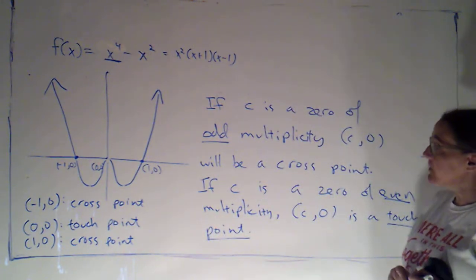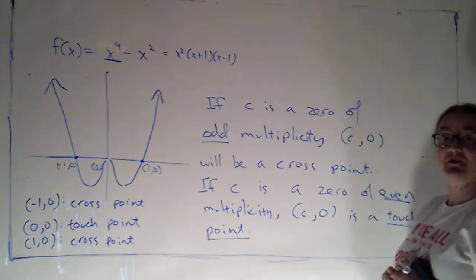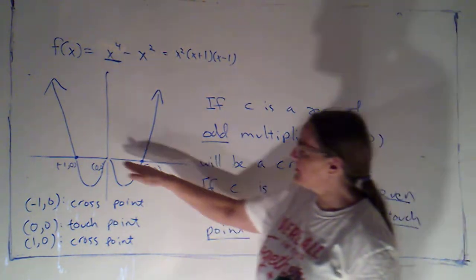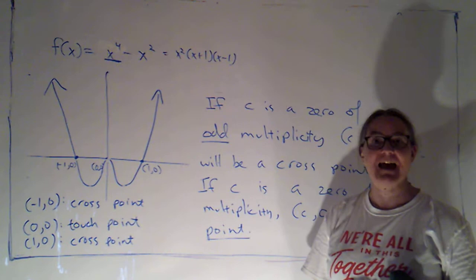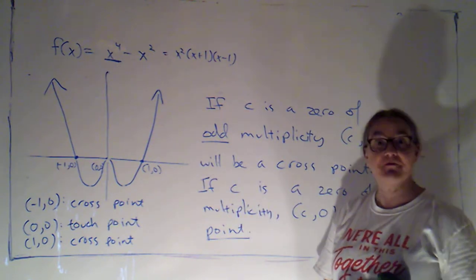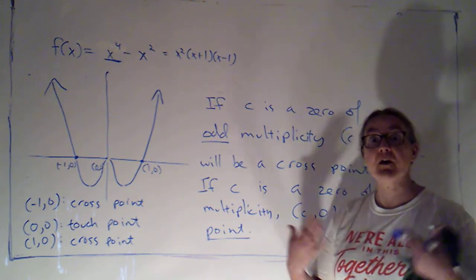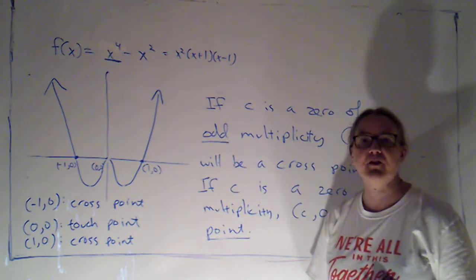So, just by looking at the multiplicity of the zeros, so once I've got things in factored form, how many times does each factor appear, I can determine whether we're going to cross or touch the x-axis at that point. So, that's another way that I can determine the shape of a graph. And in the next video, we'll do an example where that's the main skill that we rely on for figuring out the shape of our graph.